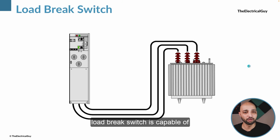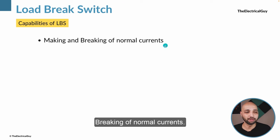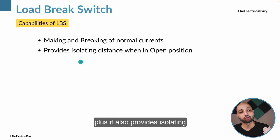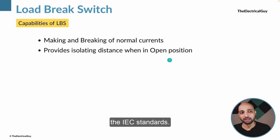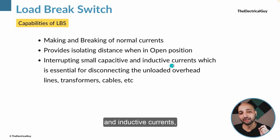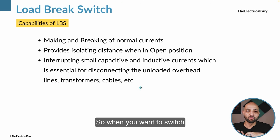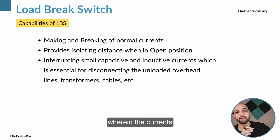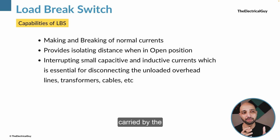Let us look at some of the capabilities of a load break switch. First: making and breaking of normal currents — this is the function of a switch as defined by IEC. Second: it provides isolating distance when in open position, satisfying the requirements of a disconnector. Third: interrupting small capacitive and inductive currents, which is essential for disconnecting unloaded overhead lines, transformers, cables, etc. When switching an unloaded line there will be some trapped charges, and that switching capability must also be present. Similarly for switching an unloaded transformer, where currents will be inductive.